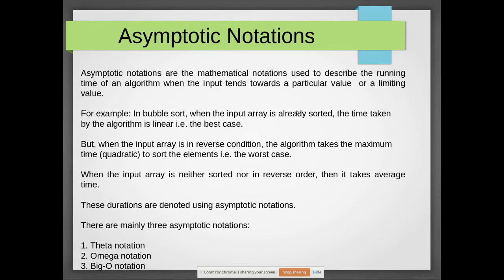In this video we are going to talk about asymptotic notation. Algorithm efficiency can be represented by asymptotic notation. For example, when we buy vegetables we measure in kilograms and grams; when we buy oil or water we use liters and ml. Likewise, there are units for measuring algorithm efficiency mathematically — that is where asymptotic notation comes in.